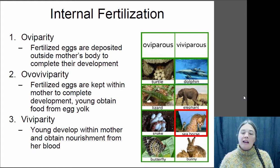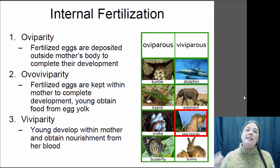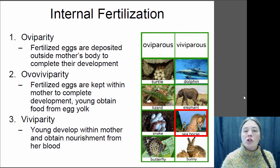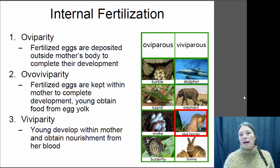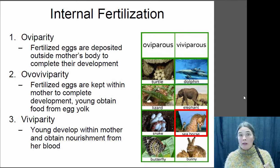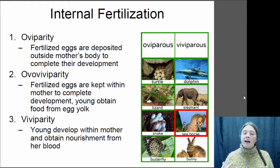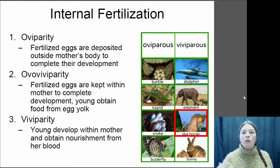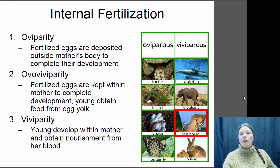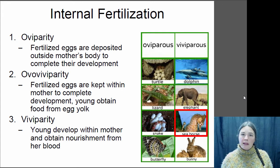And then last is viviparity — that's when you give live birth and the young develop within the mother and obtain nourishment from the mother during development. Mammals are your classic example of that group: dolphins, elephants, dogs, cats, and humans are all viviparous. Fertilization occurs inside and then the fetus is nourished by the mother's bloodstream during development. It's not like there's a self-contained egg within the mother — there's actual exchange of nutrients between the mother and the offspring.